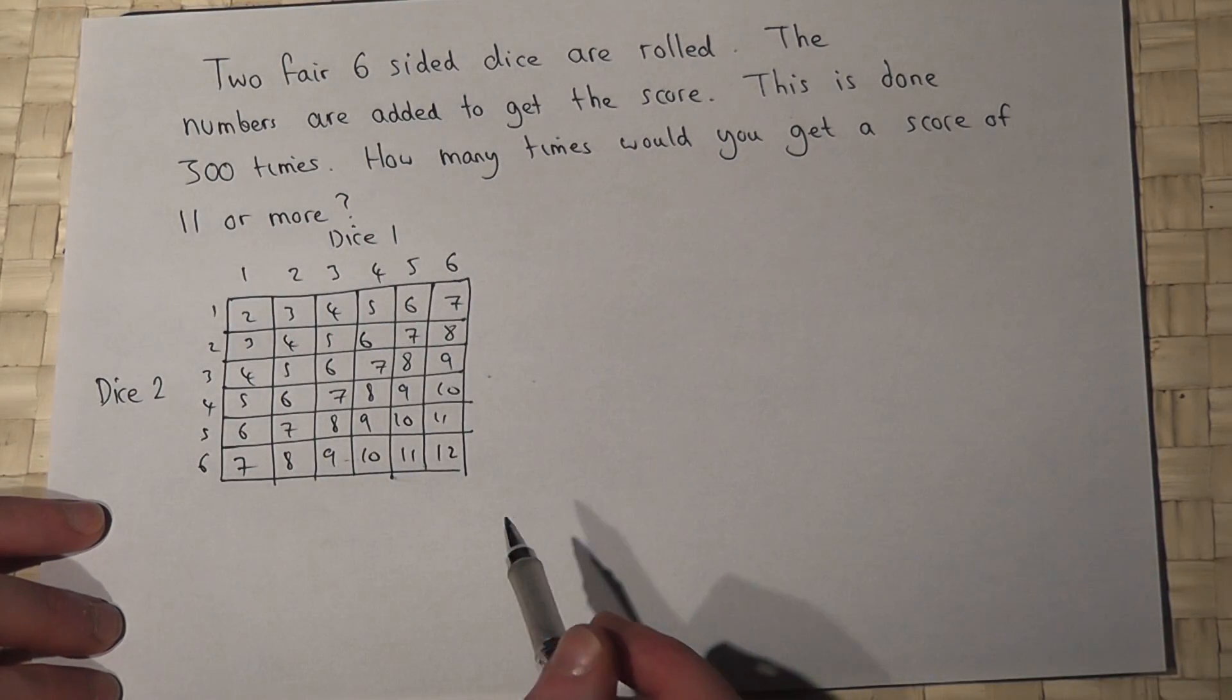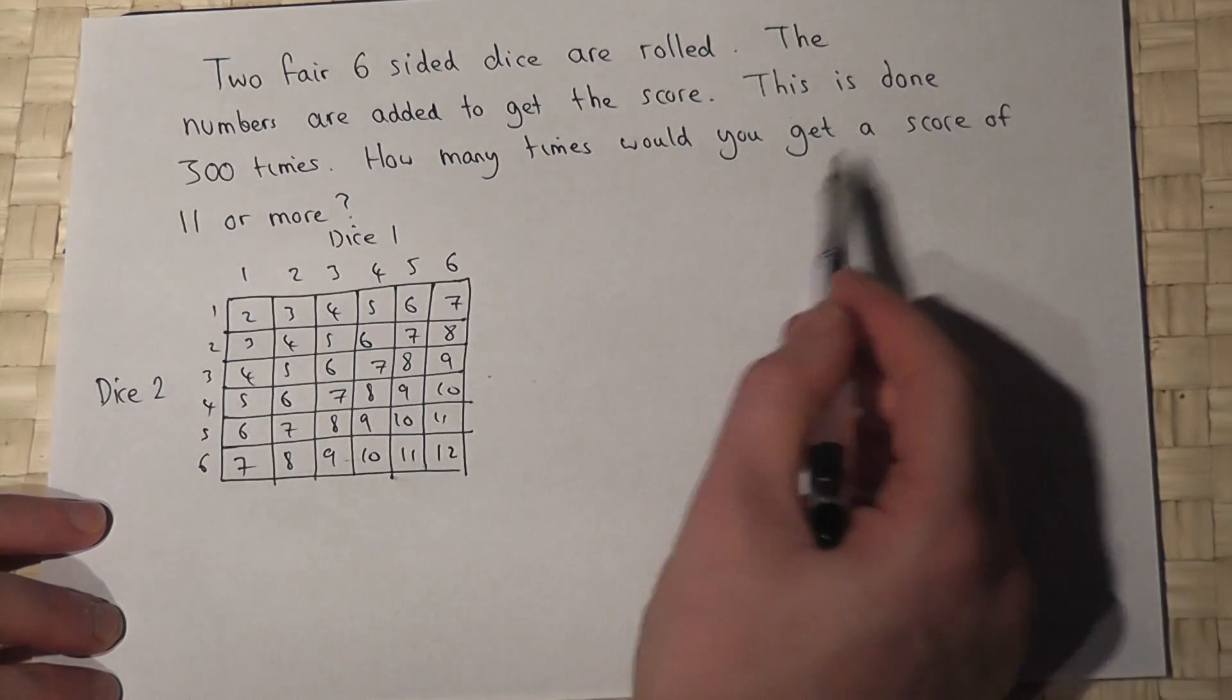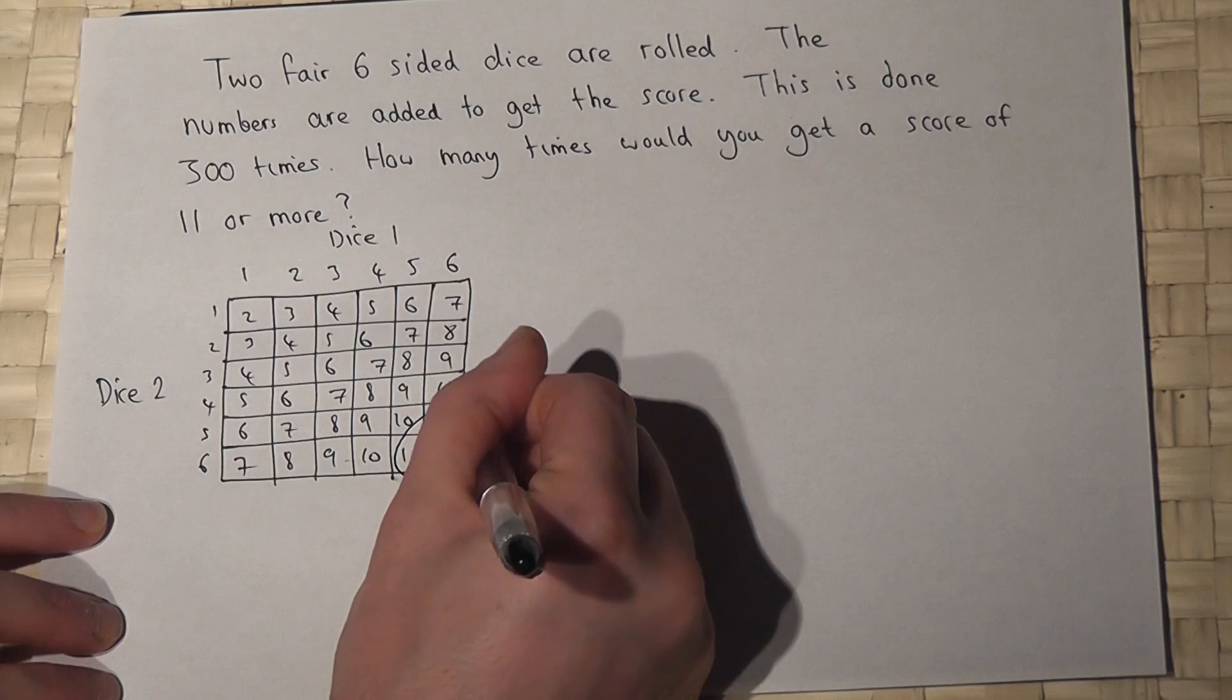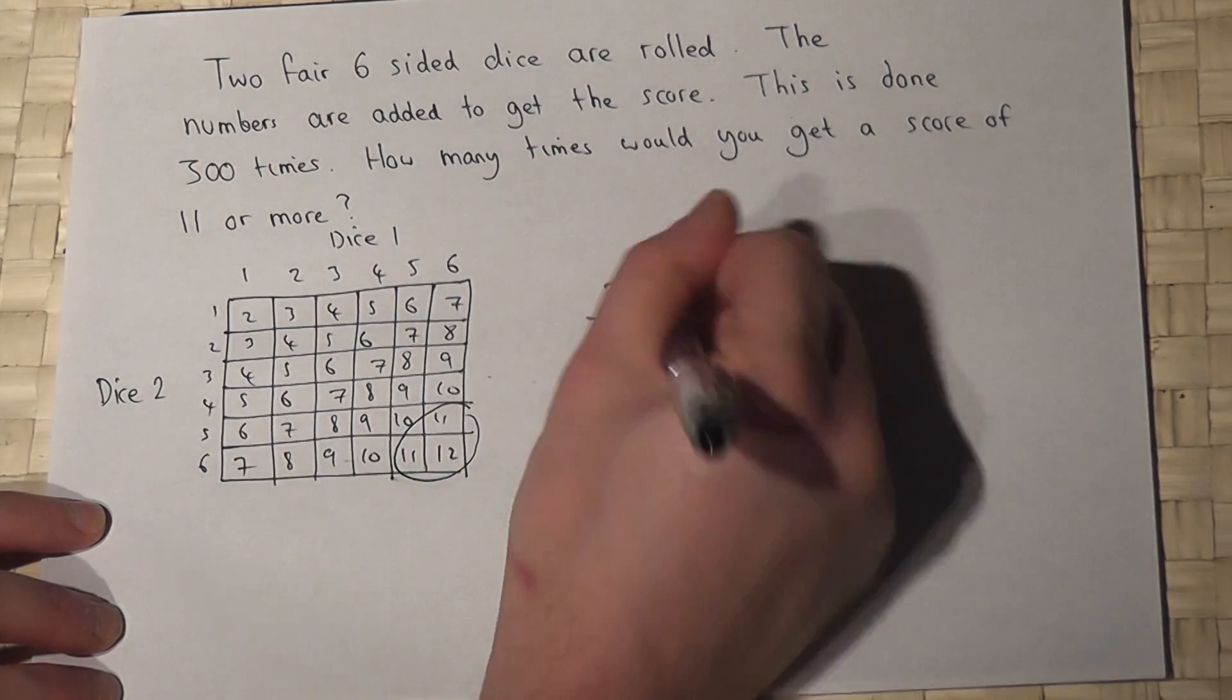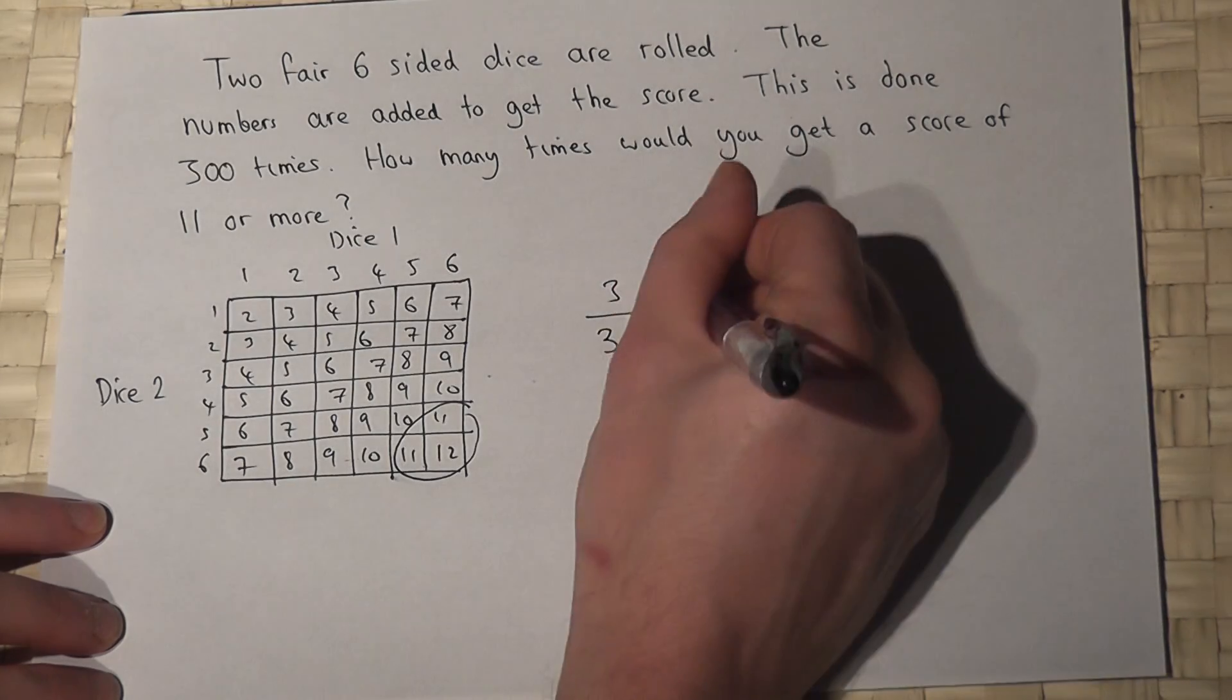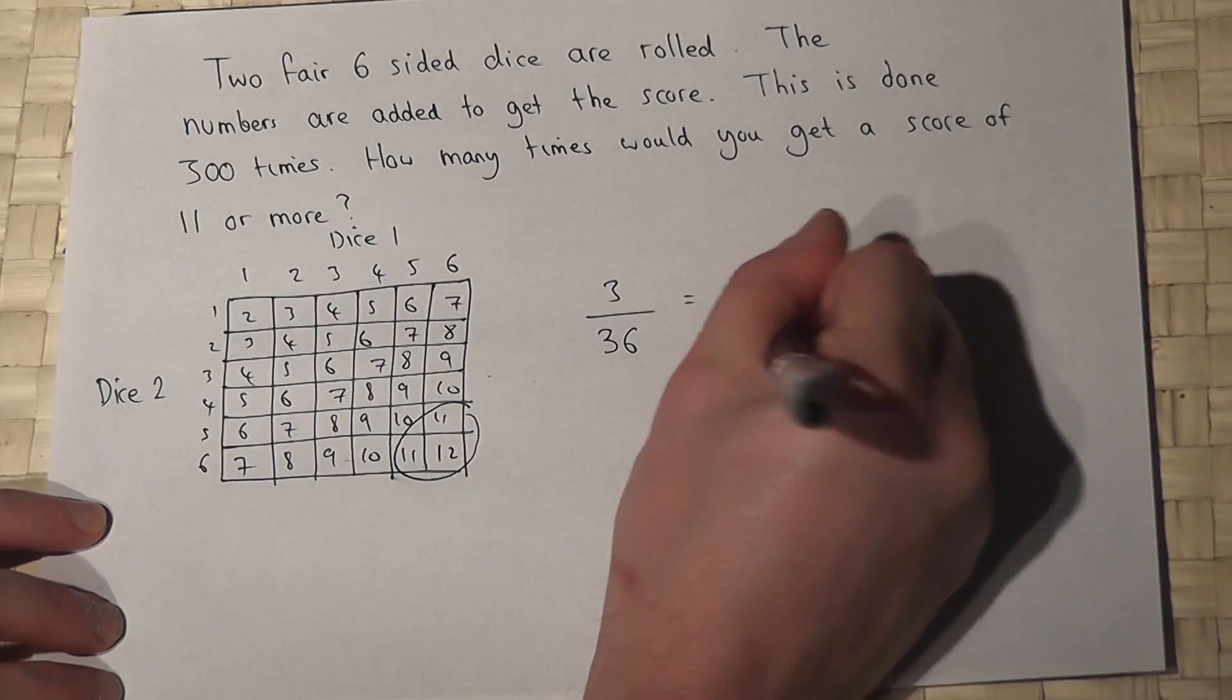So this table lists all the outcomes you get when two fair six-sided dice are rolled. Now then, the question says how many times would you expect to get a score of eleven or more? Now eleven or more only occurs on three out of the thirty-six options, or one-twelfth of all the outcomes.